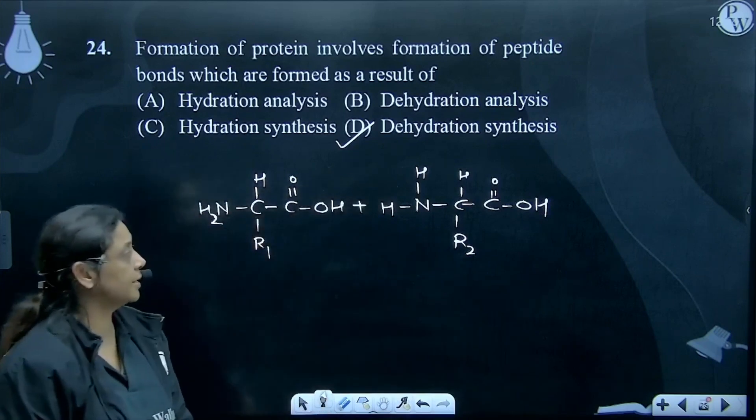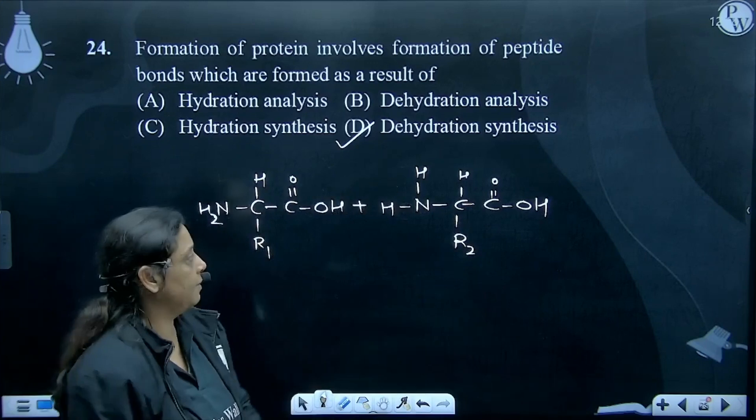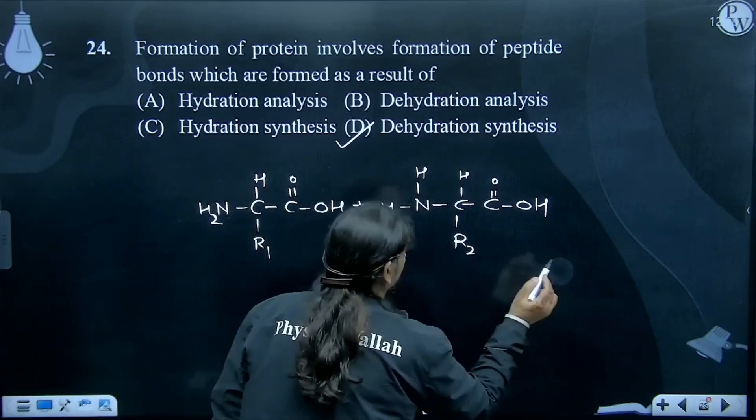Aapko kya dikhay dhe raha hai teachers. Yaha par 2 amino acids bane huye hai. Abh hume in ko jodna hai, in ko doon ko hume unite karna hai.